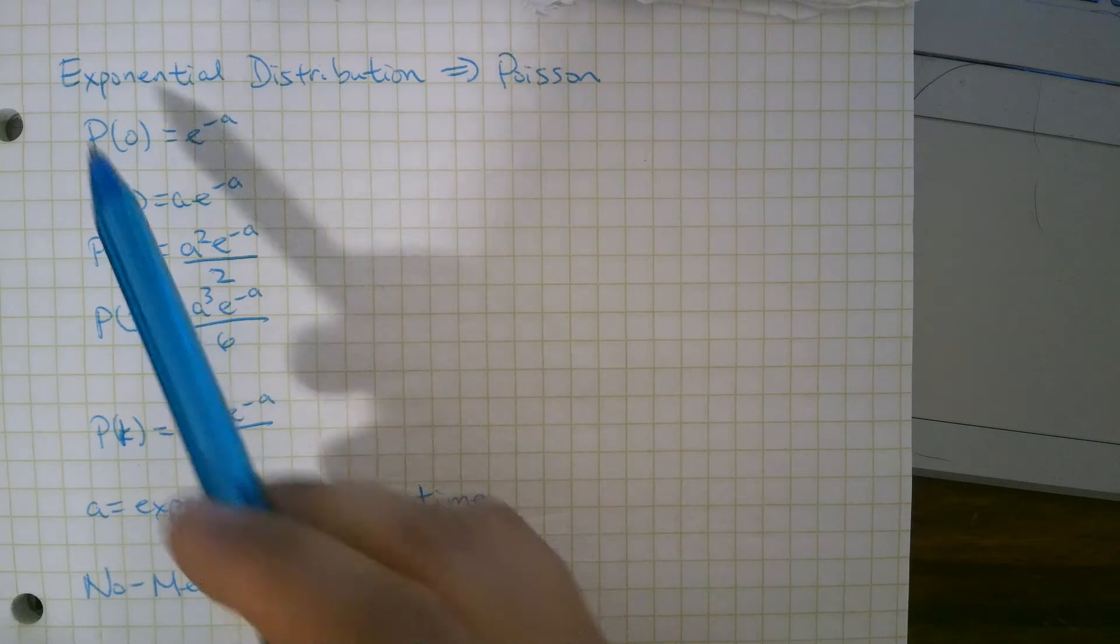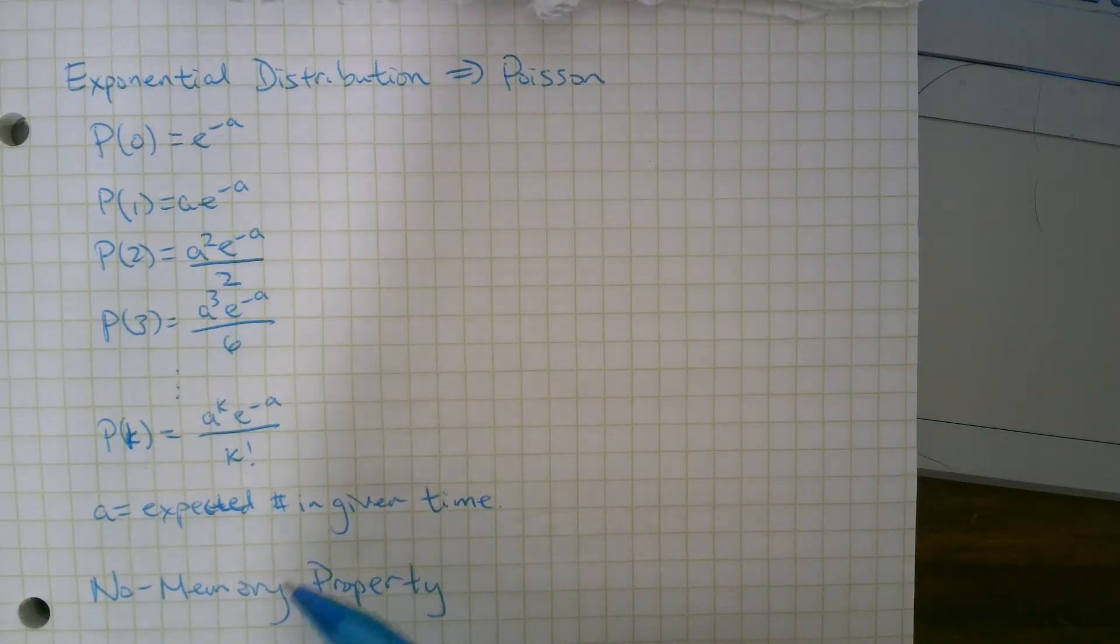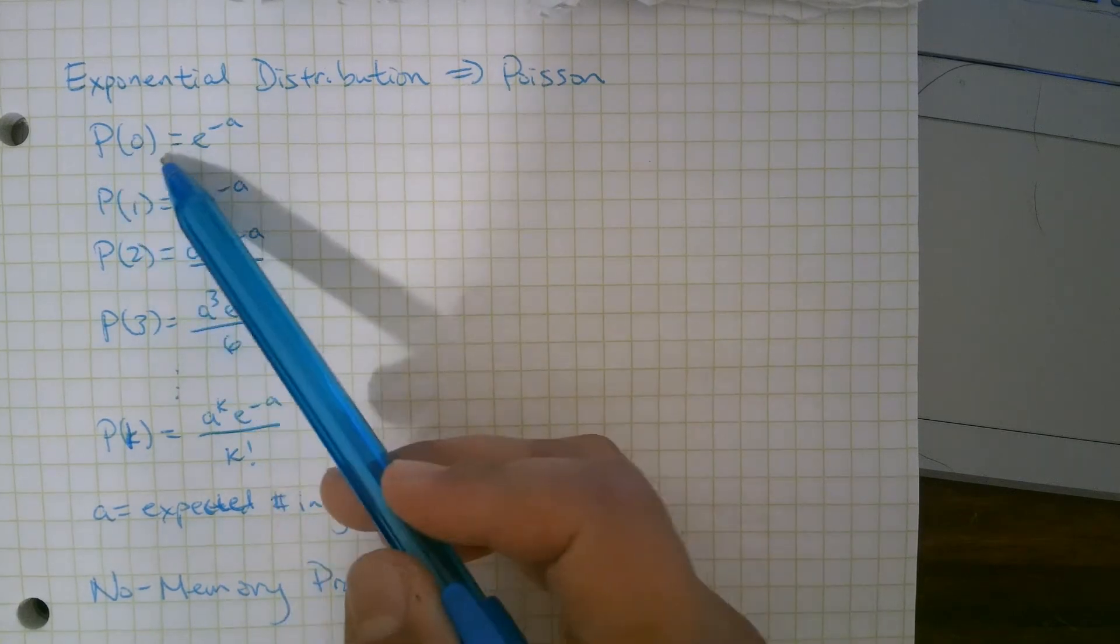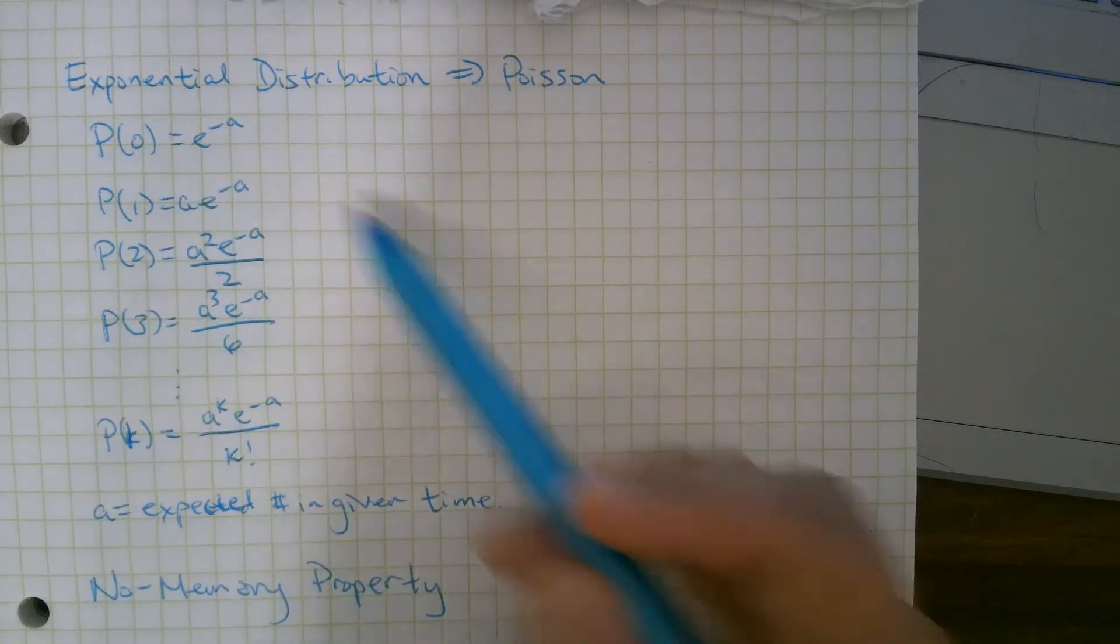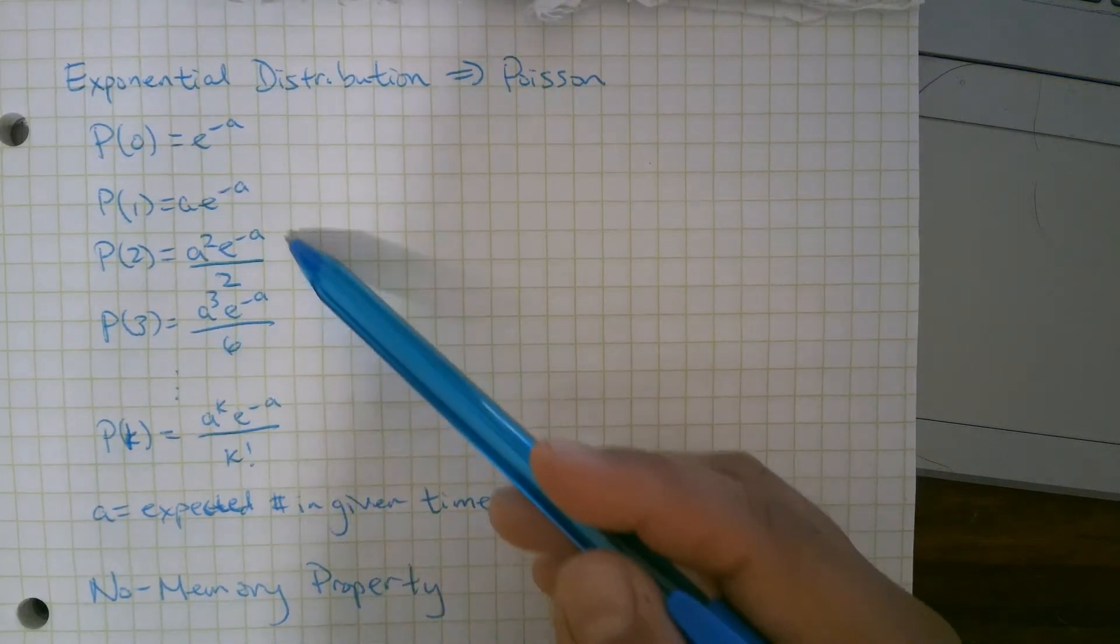They're actually coming in on an exponential distribution, and we get these Poisson probabilities. So this was the probability that there are zero customers in a given length of time, was e to the negative a. Probability of one customer, a times e to the negative a, and so on.